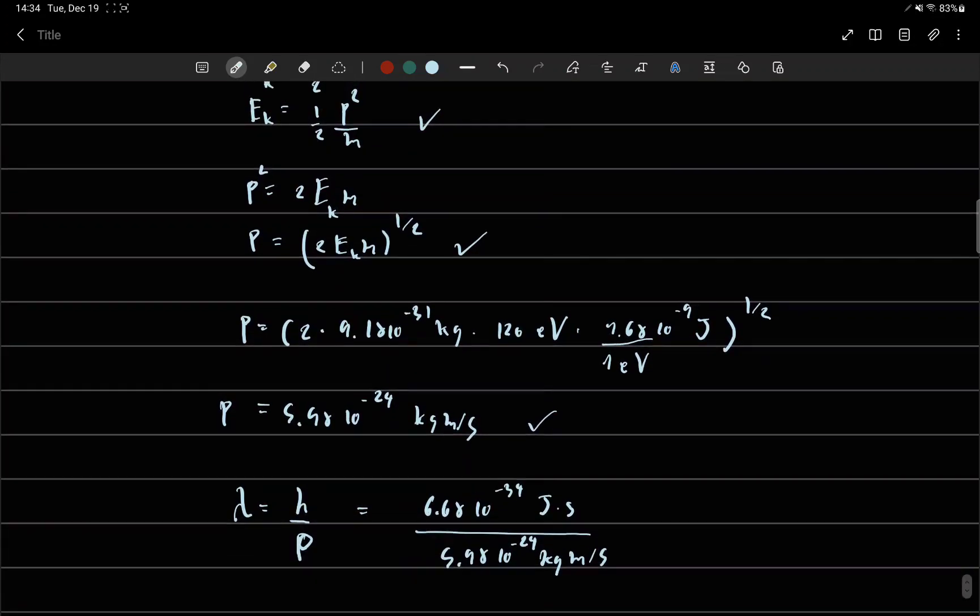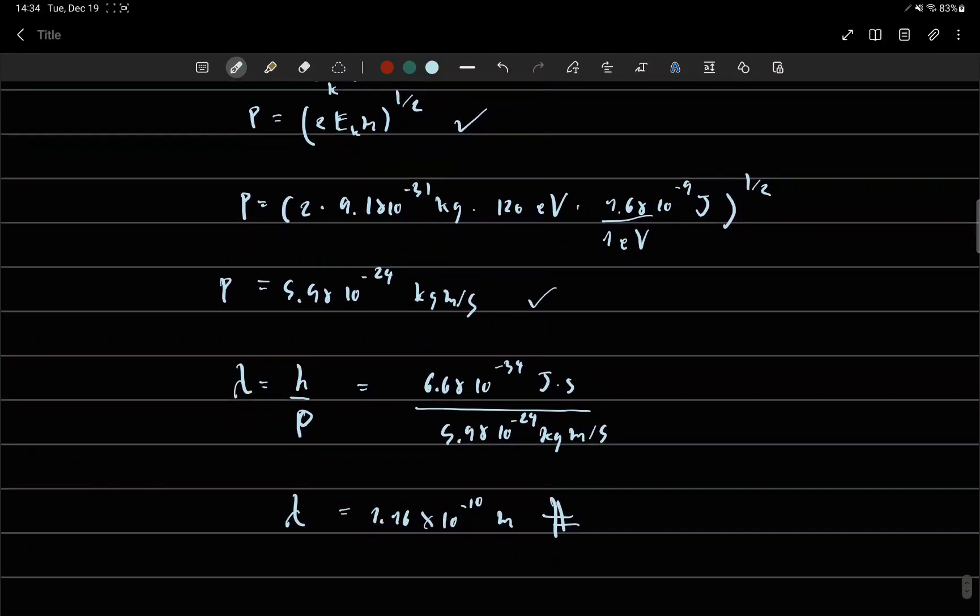And then we use the de Broglie wavelength lambda equal to h over p. So the de Broglie wavelength is equal to 1.16 times 10 to the minus 10 meters. Thank you.